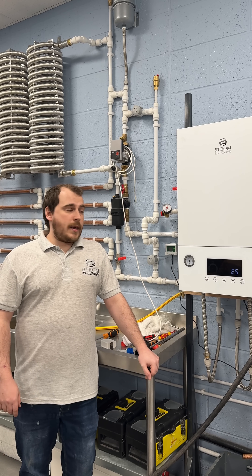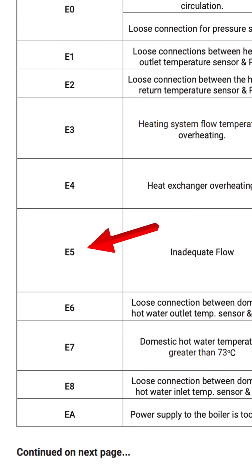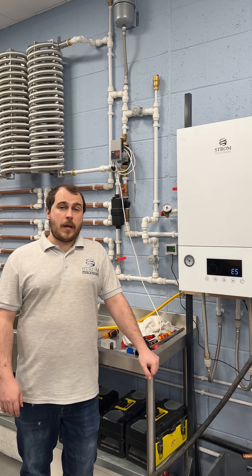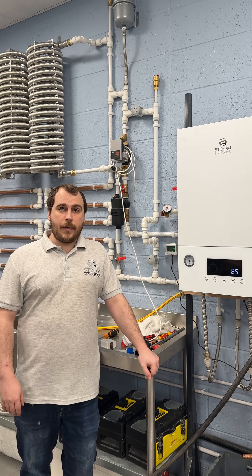So today I'm going to be taking you through the E5 error code on our Strom boilers. It's the most common error code that we see on our boilers and I'm going to be explaining why it happens.